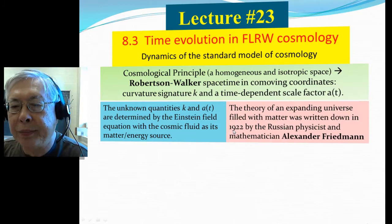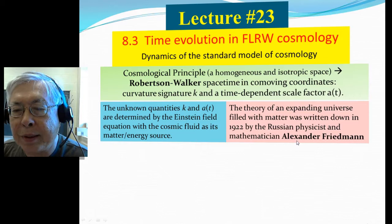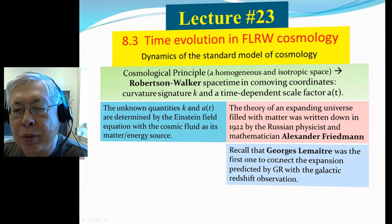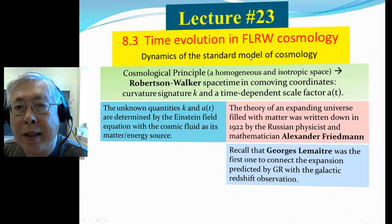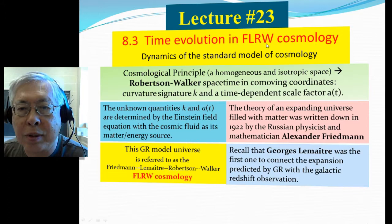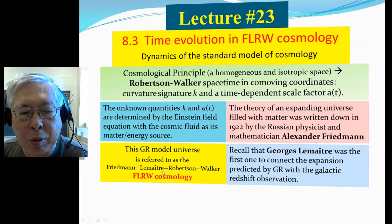The theory of expanding universe filled with matter was first written down in 1922 by the Russian physicist and mathematician Alexander Friedmann. Remember, Georges Lemaître was the first one to connect the expansion predicted by GR with the galactic redshifts. So the F stands for Friedmann and L for Lemaître. And then, of course, RW stands for Robertson-Walker metric. So this is the standard model cosmology: Friedmann, Lemaître, Robertson-Walker.